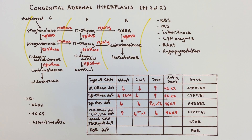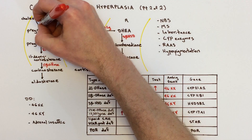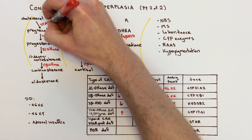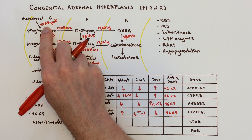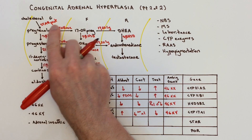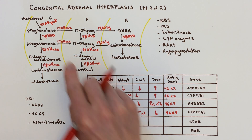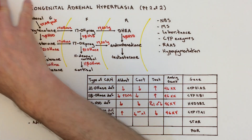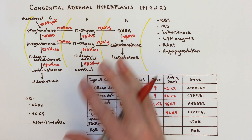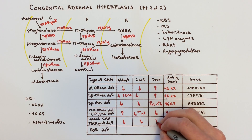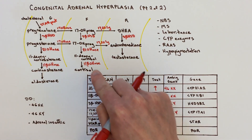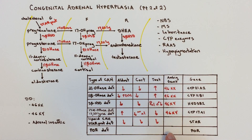Next is lipoid CAH — a deficiency of StAR protein, which stands for steroidogenic acute regulatory protein. StAR fits right at the top of the pathway. In this case, we have a failure to convert cholesterol into pregnenolone, so the whole pathway never gets started properly. Across the board there are low hormones: not making enough aldosterone, not making enough cortisol, not making enough testosterone, because we don't even get started from cholesterol.